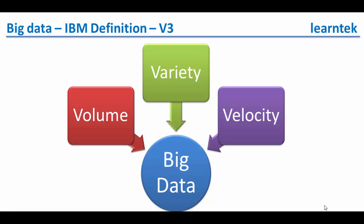IBM definition for big data is V3: volume, variety and velocity.